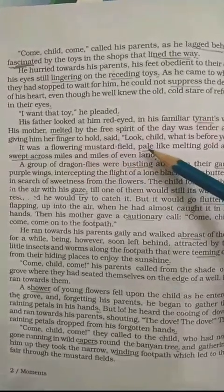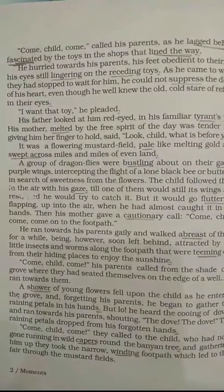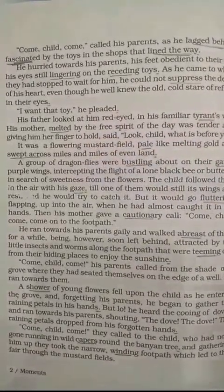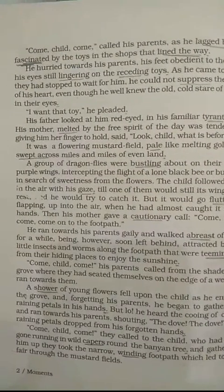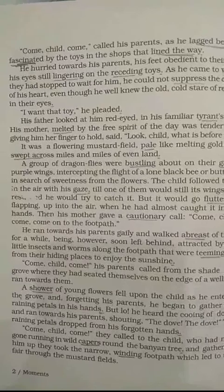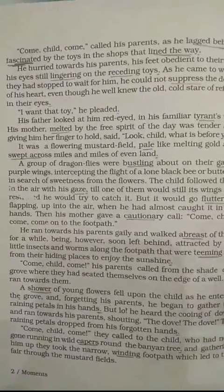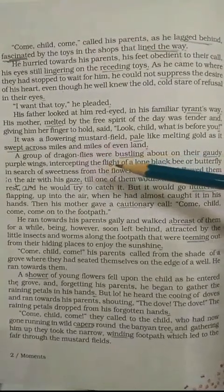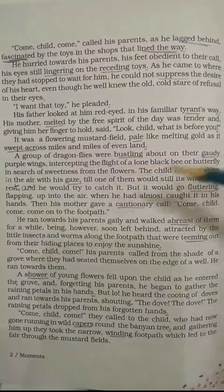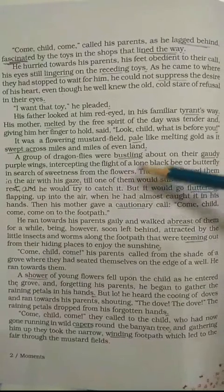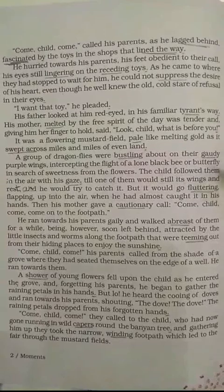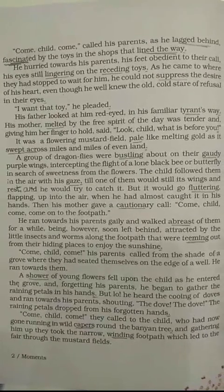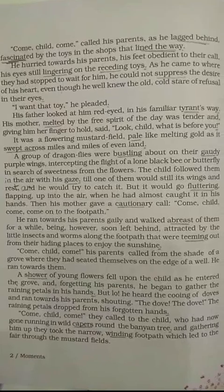It was a flowering mustard field, pale like melting gold as it swept across miles and miles of even land. 'Pale' means dull or colorless, and 'swept across' means spread. There was a vast field full of bright yellow mustard flowers that seemed like flowing streams of gold, spread wide. A group of dragonflies were bustling about on their gaudy purple wings, intercepting the flight of a lone black bee or butterfly in search of sweetness from the flowers. 'Bustling' means full of activity, 'gaudy' means extremely bright.